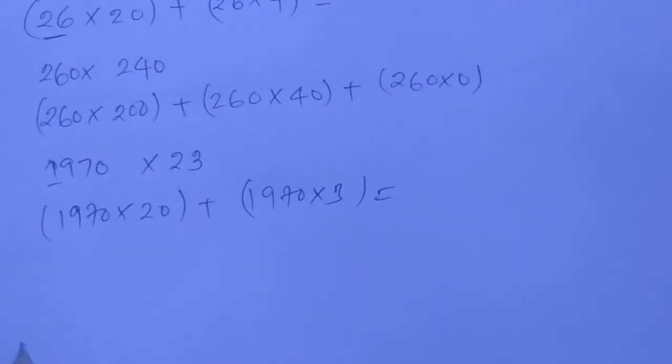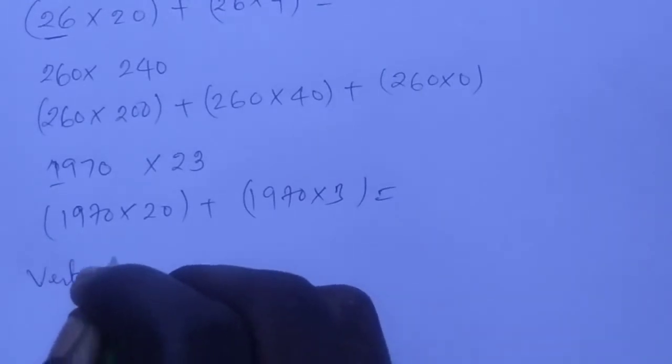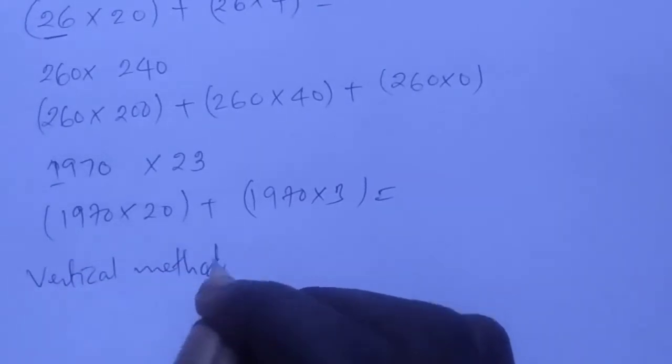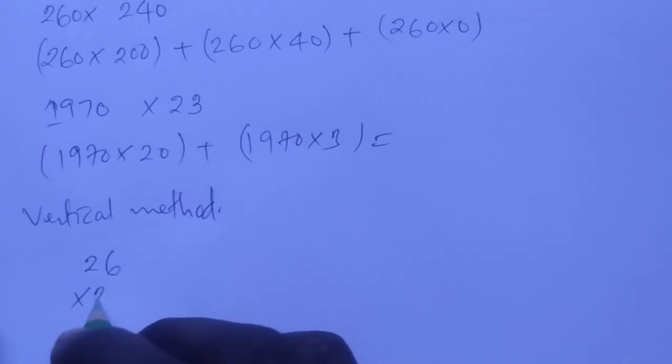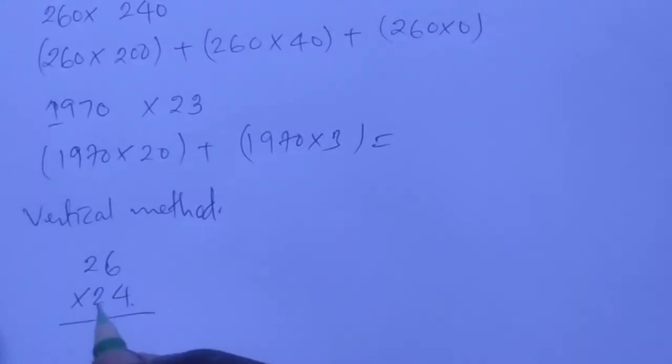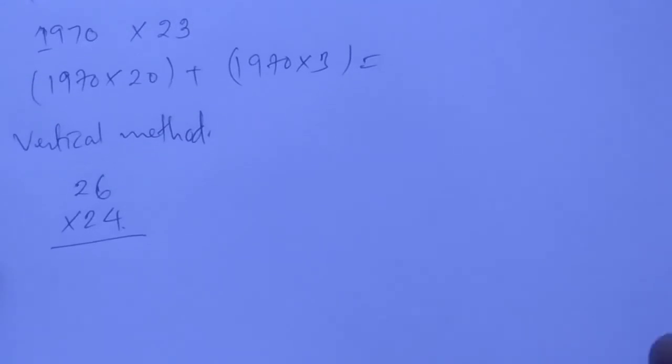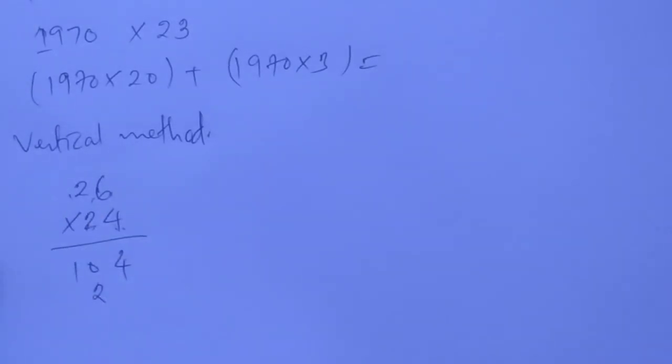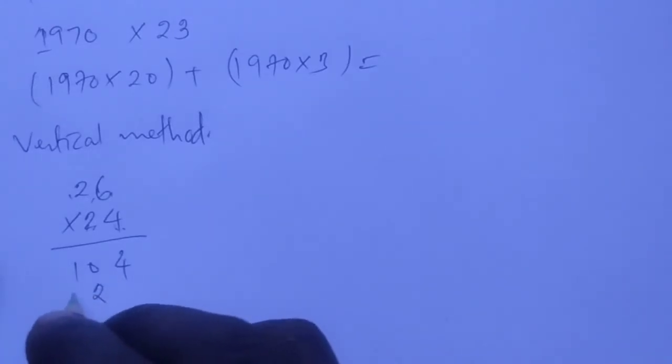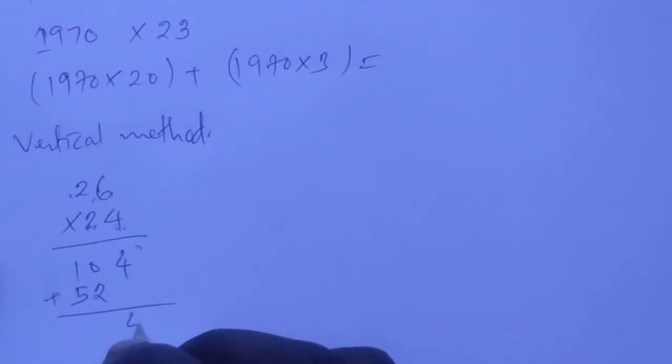In the vertical method of multiplication, let's say 26 times 24. We start multiplying from the ones place, so it becomes 4 times 6 is 24, then 4 times 2 is 8 plus 2 equals 10. Then 2 times 6 is 12, 2 times 2 is 4 plus 1 equals 5. Then we add to get 624.